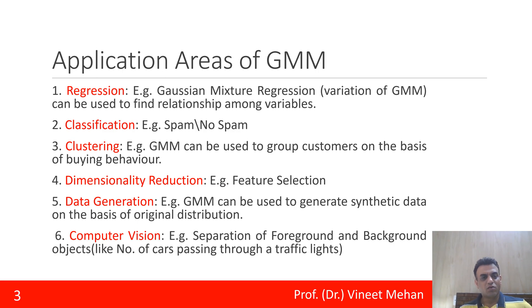Now the next is what are the application areas where GMM could be applied. The first application area is regression. So what happens in regression is we try to find the relationship between variables, and for this a particular variant of Gaussian Mixture Model is used, and that variant is called as Gaussian Mixture Regression.